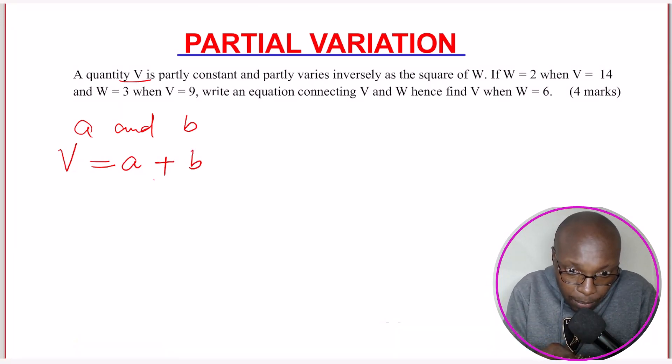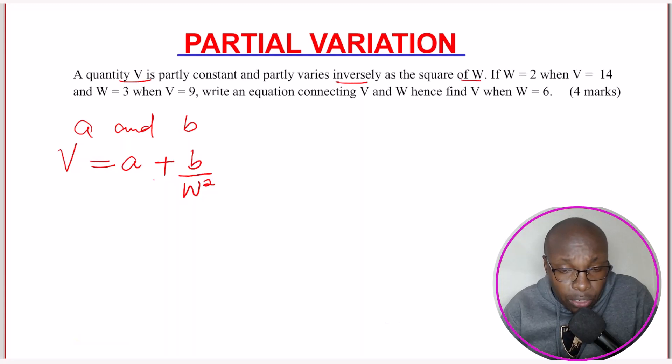So B, then inversely as the square of W. Inversely, you have to put a division sign here. It must come in the denominator. Inversely as the square of W. That is W squared. So that is how you write it.